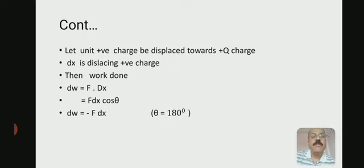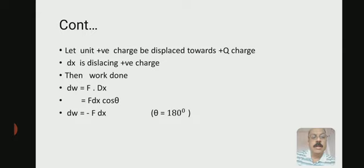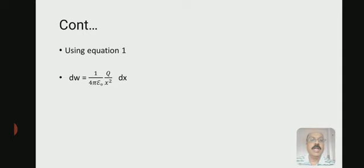We take cosθ because force and dx are both in vector form, and their dot product gives F·dx·cosθ. Now theta is 180 degrees, and cos 180° = −1. Therefore the minus sign comes in: dW = −F × dx.